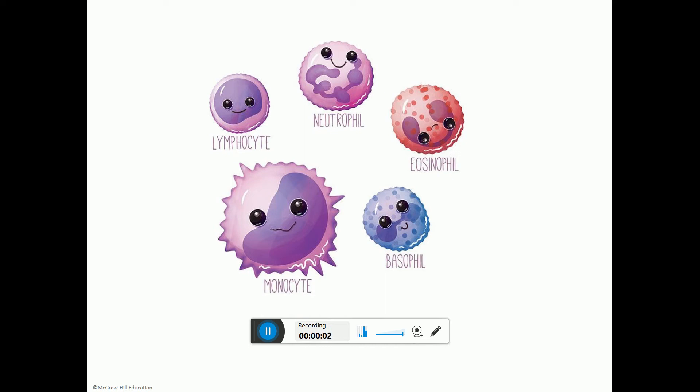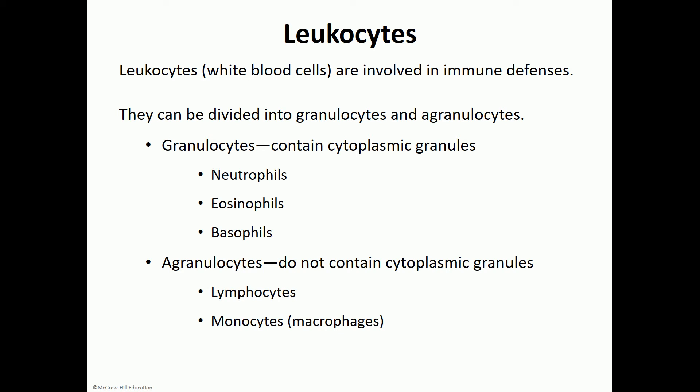This tutorial will go over white blood cells and platelets. Leukocytes are white blood cells, and you want to be familiar with both terms. These are involved in our defenses and are really part of the immune system. They can be divided according to the presence or absence of granules in the cytoplasm into granulocytes and agranulocytes.